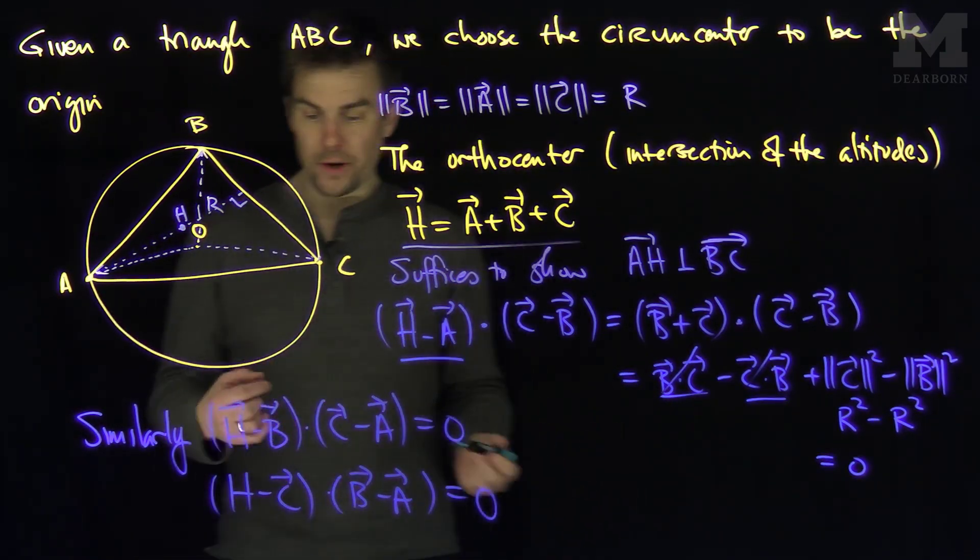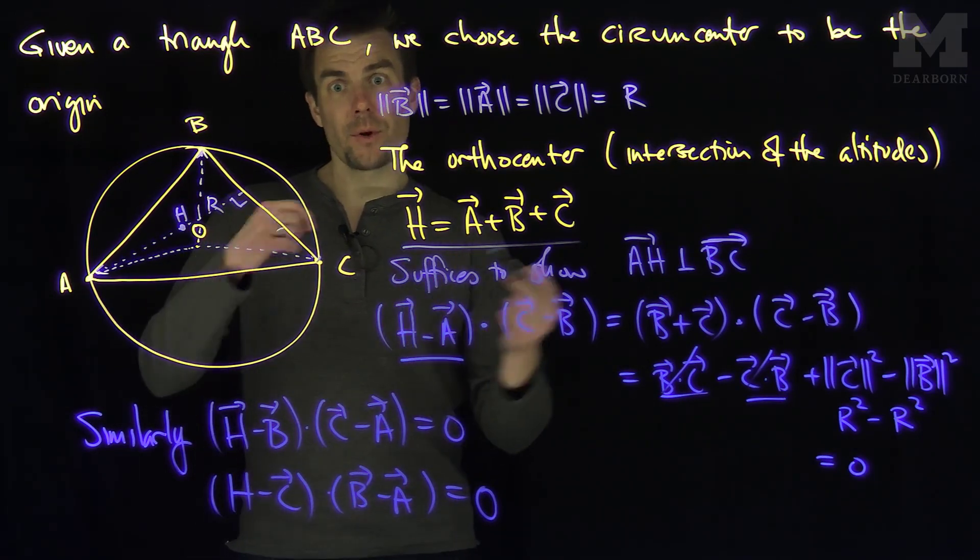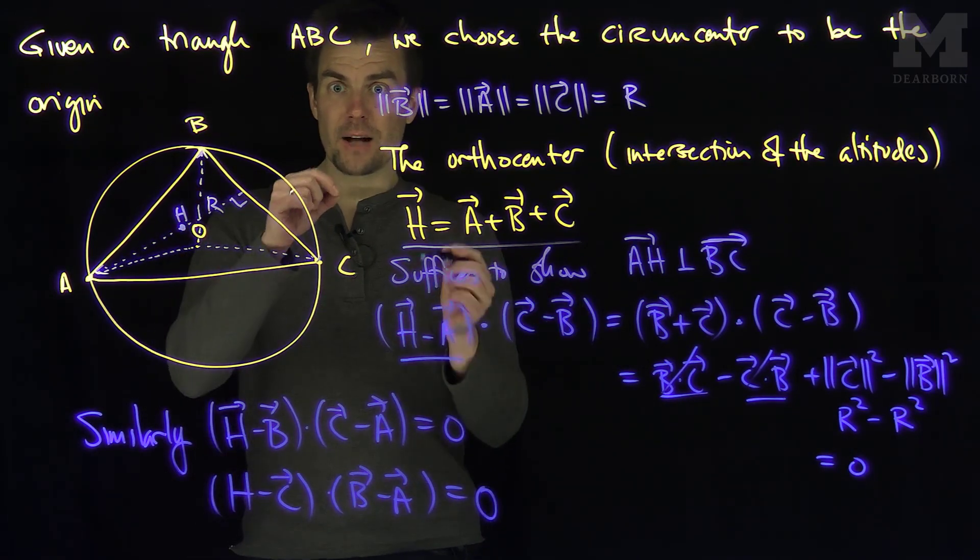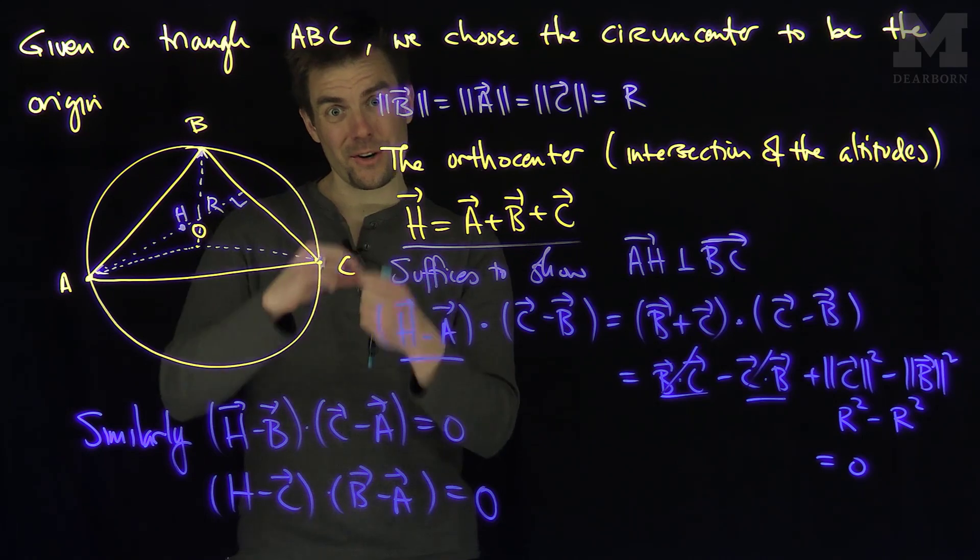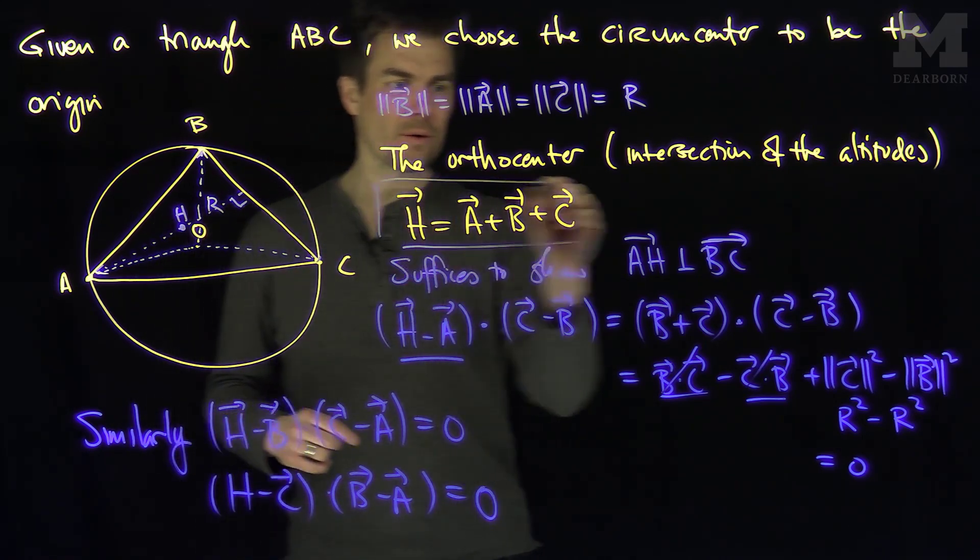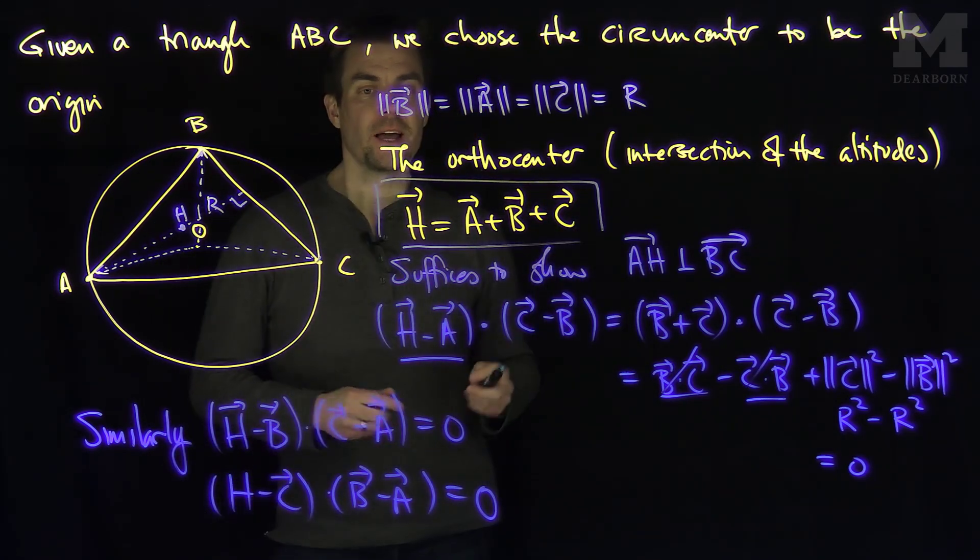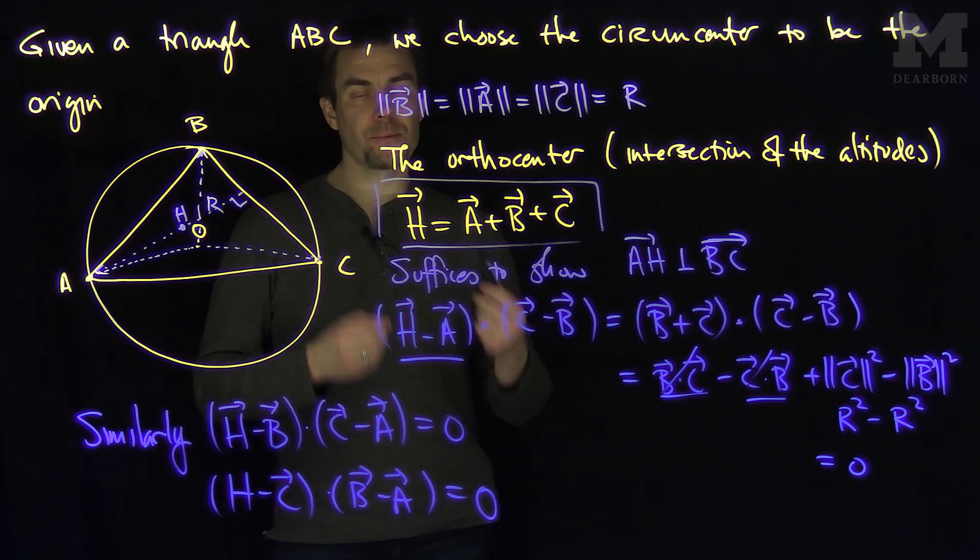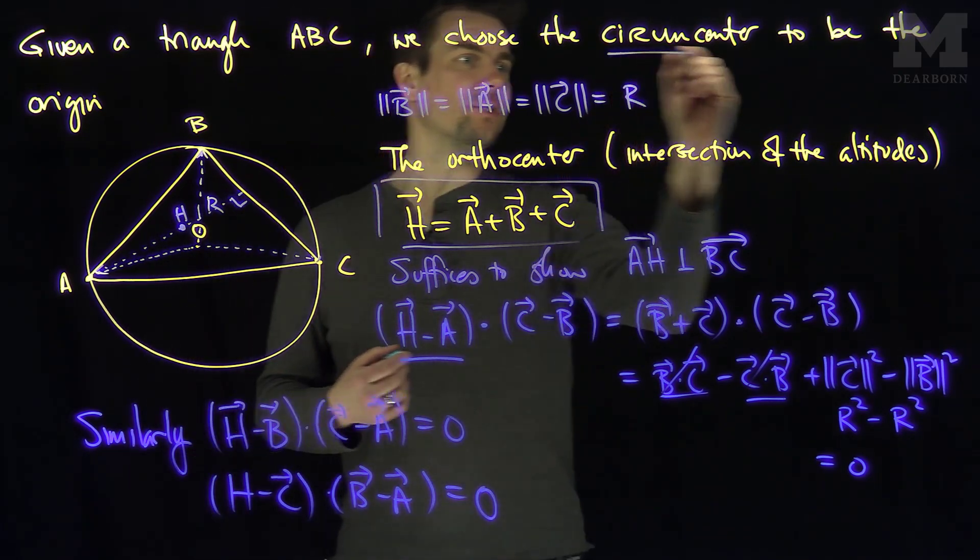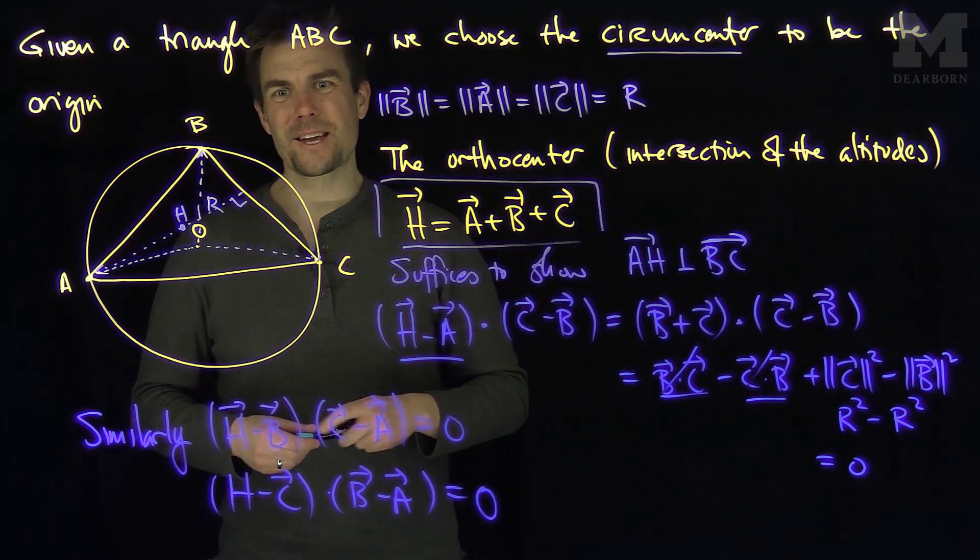So that shows me that this point H is on every altitude, so H is not only on each altitude, all the altitudes are concurrent at this point H. So the orthocenter of a triangle in vector form is A plus B plus C, if we choose the circumcenter to be the origin. Thank you very much.